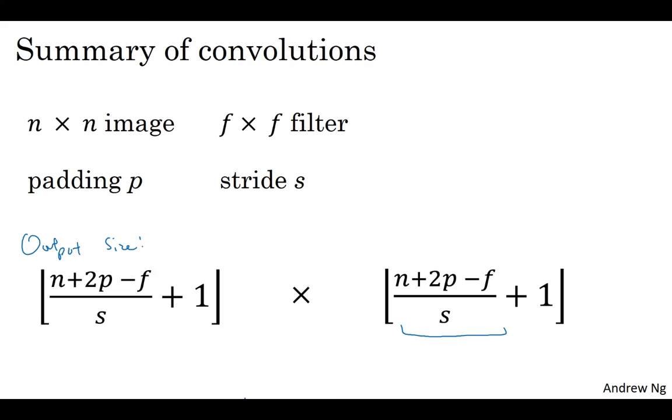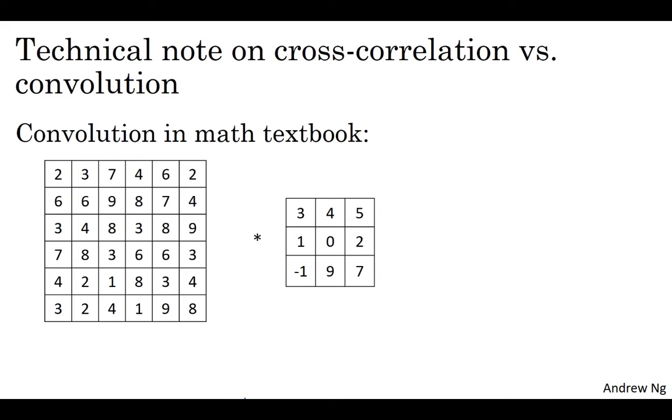Now, before moving on, there is a technical comment I want to make about cross-correlations versus convolutions. And this won't affect what you have to do to implement convolutional neural networks, but depending on if you read a different math textbook or signal processing textbook, there is one possible inconsistency in the notation, which is that if you look at a typical math textbook, the way that the convolution is defined, before doing the element-wise product and summing, there's actually one other step that you would first take, which is to convolve this six by six matrix with the three by three filter. You would first take the three by three filter and flip it on the horizontal as well as the vertical axis.